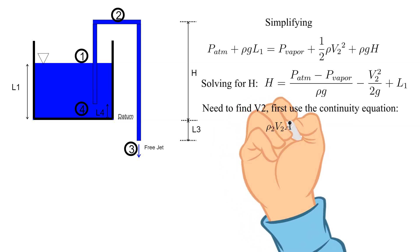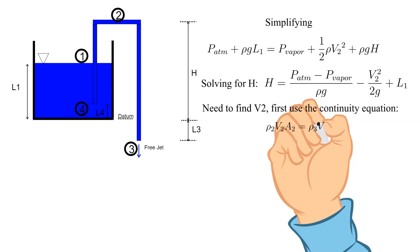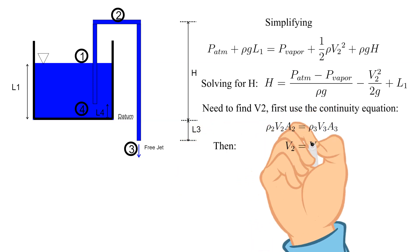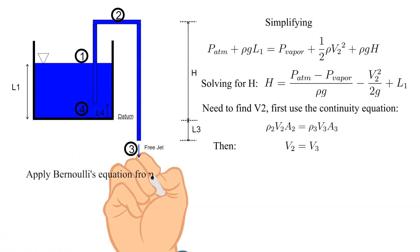V2 is still unknown but we can use the continuity equation to relate it to point 3. The continuity equation from points 2 to 3 is, rho 2, V2, A2, equals rho 3, V3, A3. Then V2 equals V3.